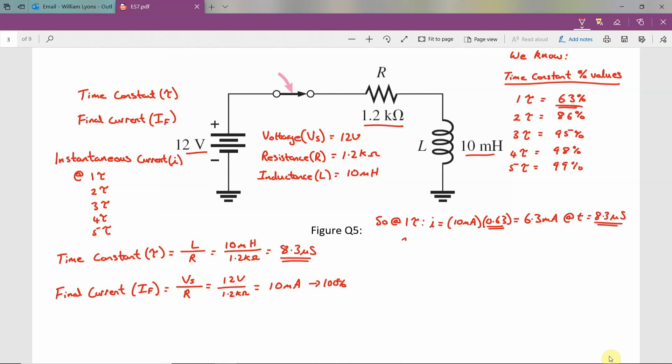At 2τ, the instantaneous current I is equal to 10 milliamps multiplied by 0.86, which is equal to 8.6 milliamps at a time value of 16.6 microseconds.